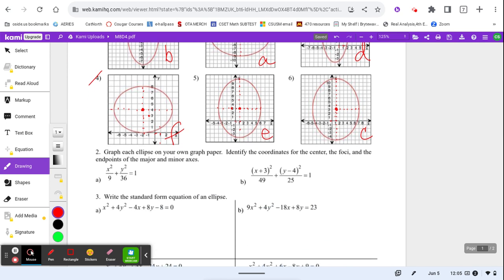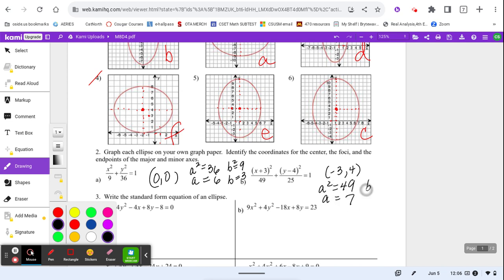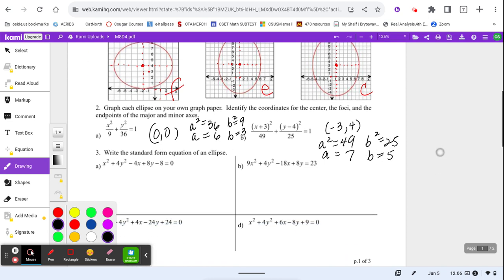Okay, next it said to graph these ellipses on your own paper, but we, just knowing we weren't going to grab extra graph paper, said just get the center, the A and the B. Center for this one is (0, 0). Remember that on an ellipse, your A is your larger. So A squared is 36 means A equals 6. B squared is 9 means B equals 3. Over here, my center is negative 3, positive 4. A squared is the larger, so A is 7. B squared is the smaller, so B is 5.